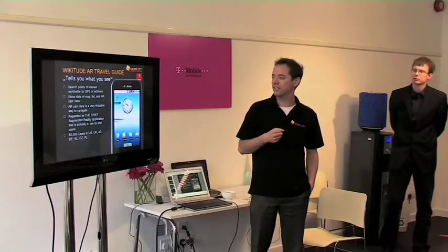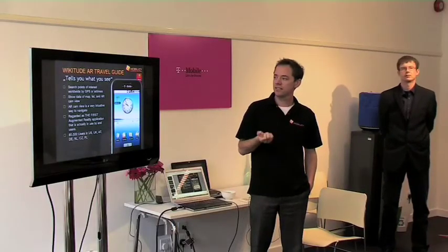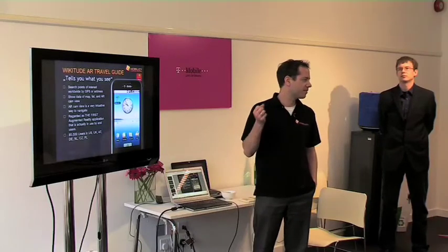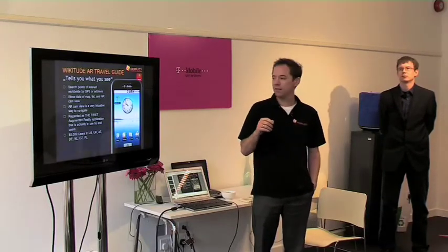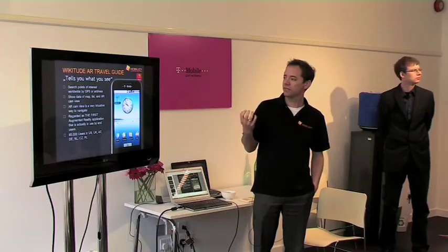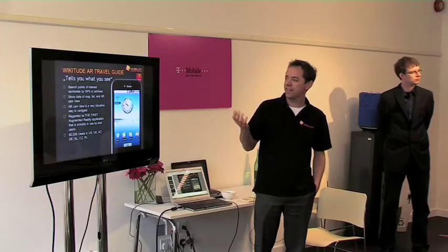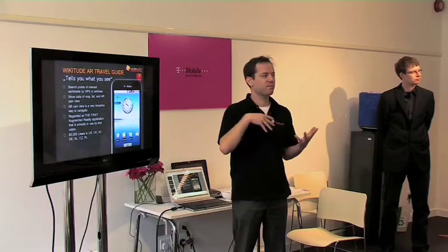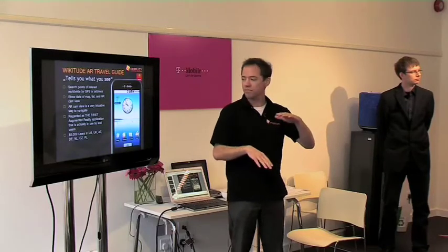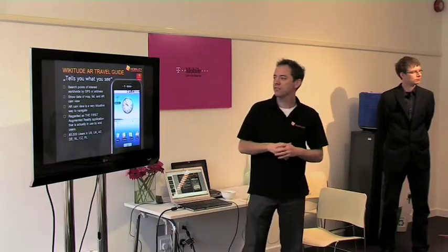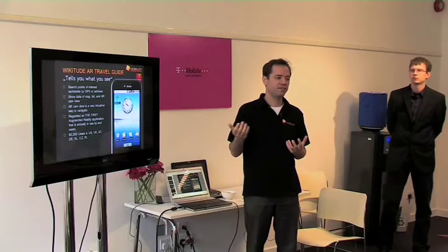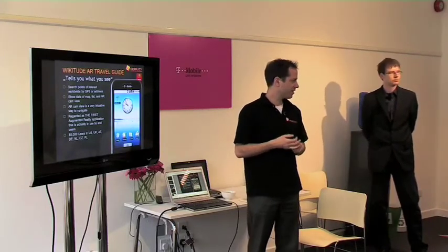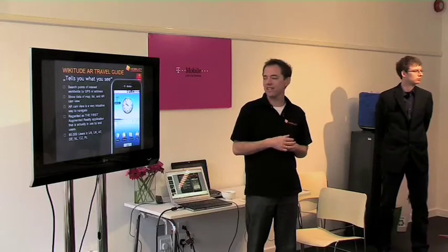Wikitude is actually a travel guide for the Android phone based on Wikipedia data. We added a map view, so you can see points of interest on a map, or on a list. But the most exciting feature is actually the camera view, and this is the augmented reality part of it.